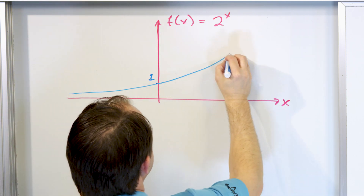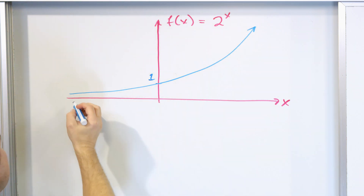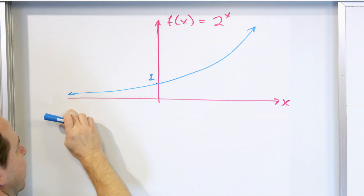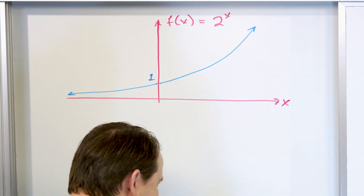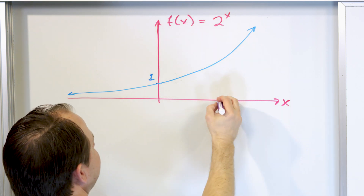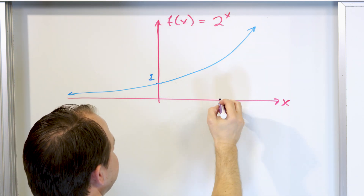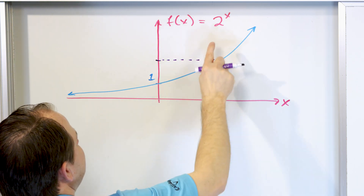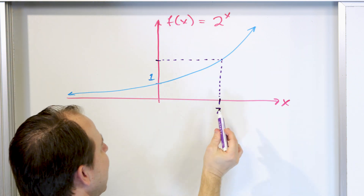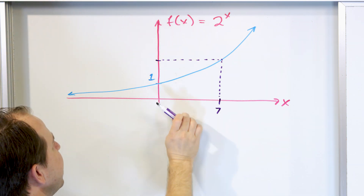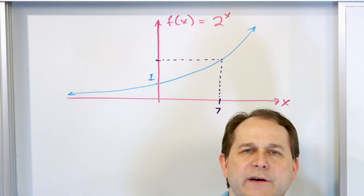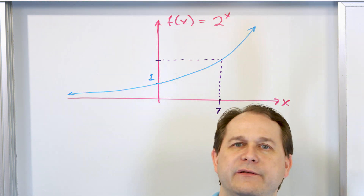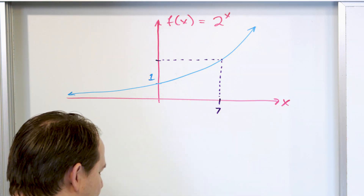The function goes through that point and goes up. What we mean by one-to-one is that for every input, we go up and get only one output. For instance, if x equals seven, we read off two to the power of seven. There are no weird wiggles or curves to give more than one output — it is one input to one output. That makes it a one-to-one function.